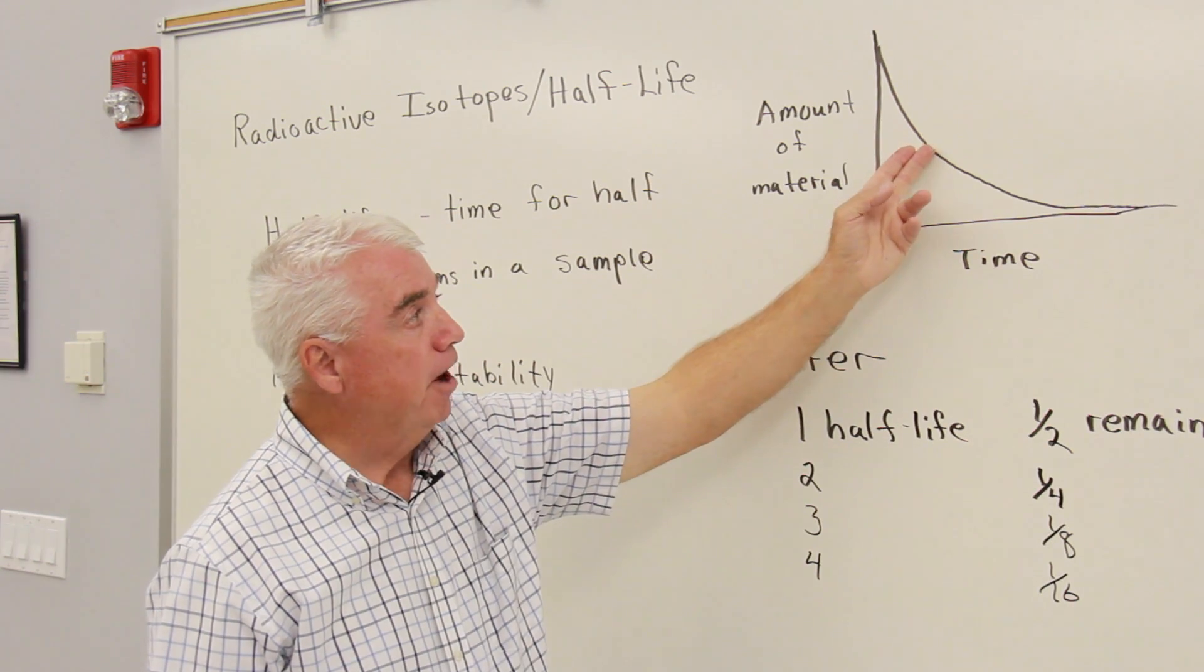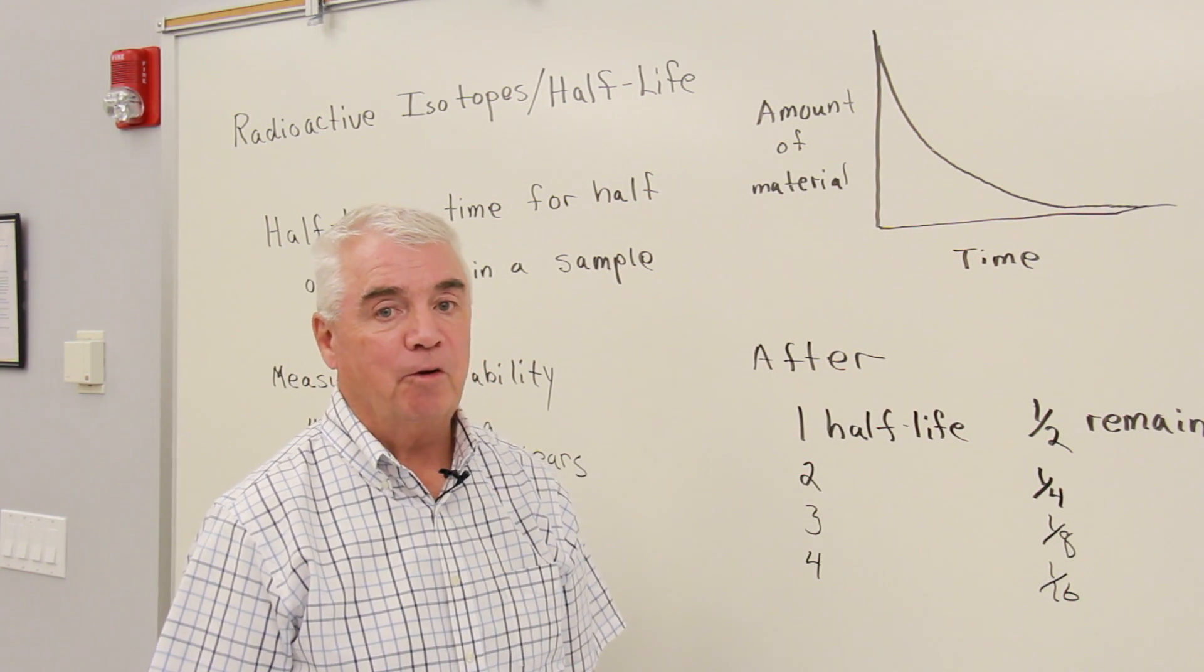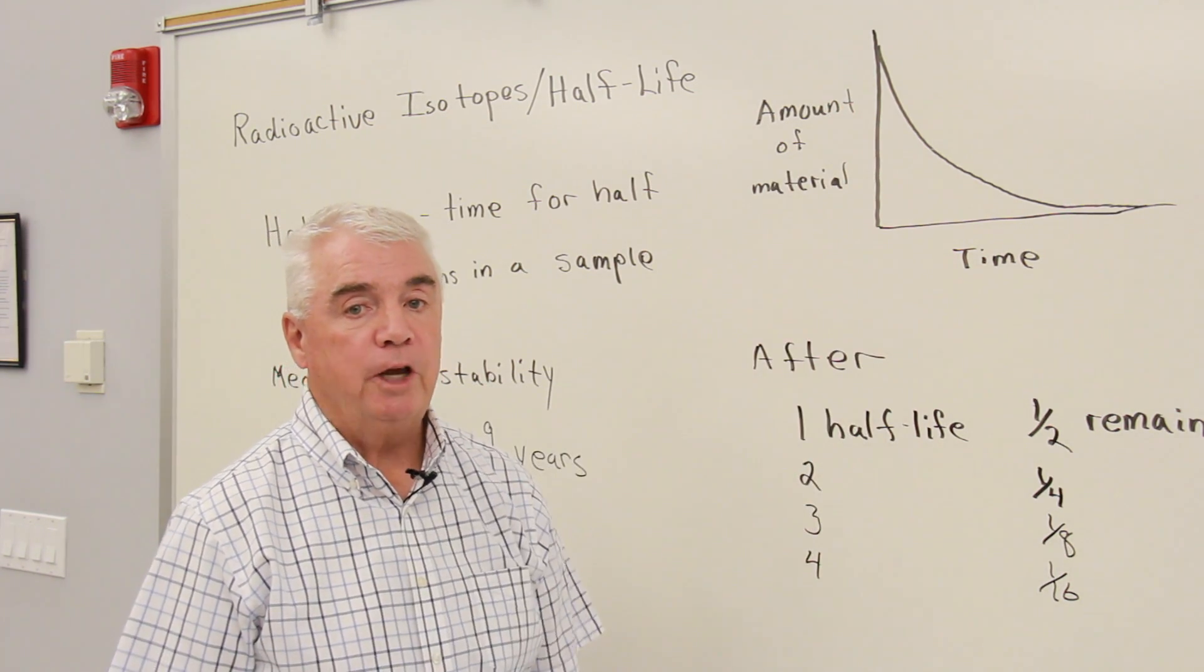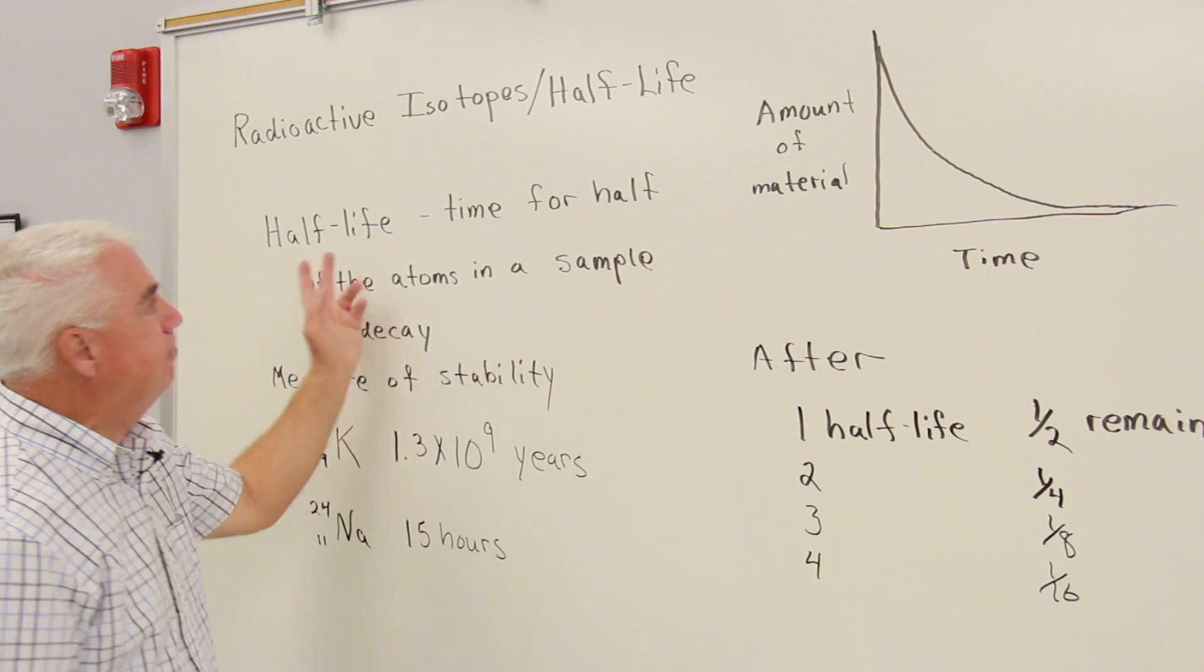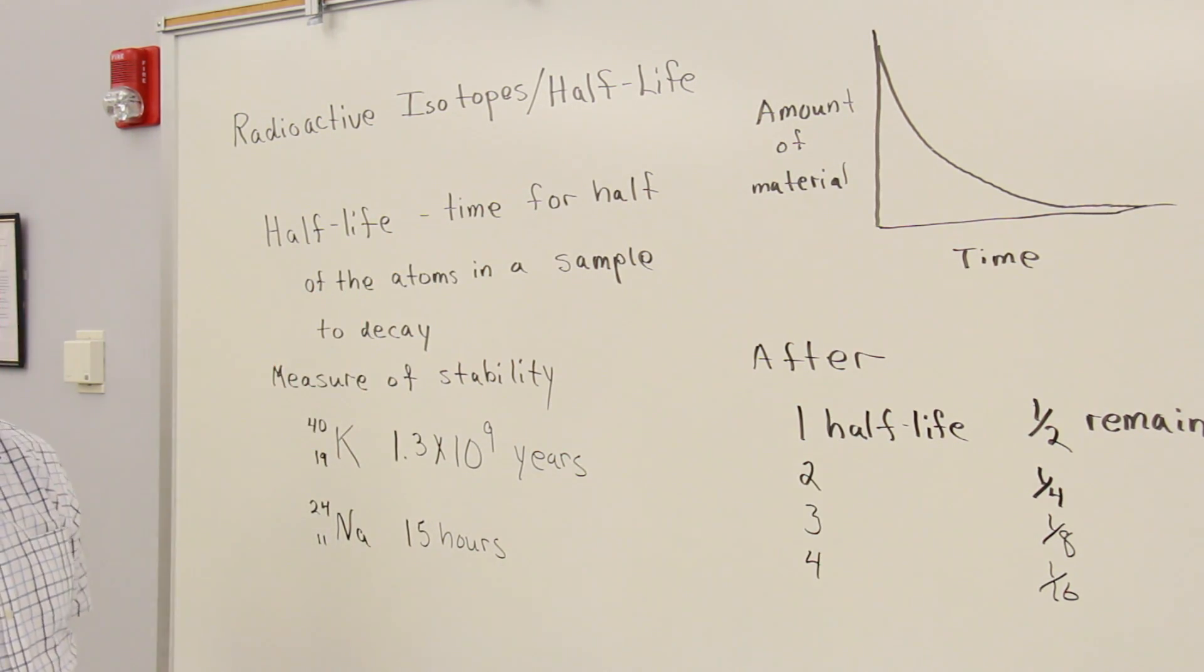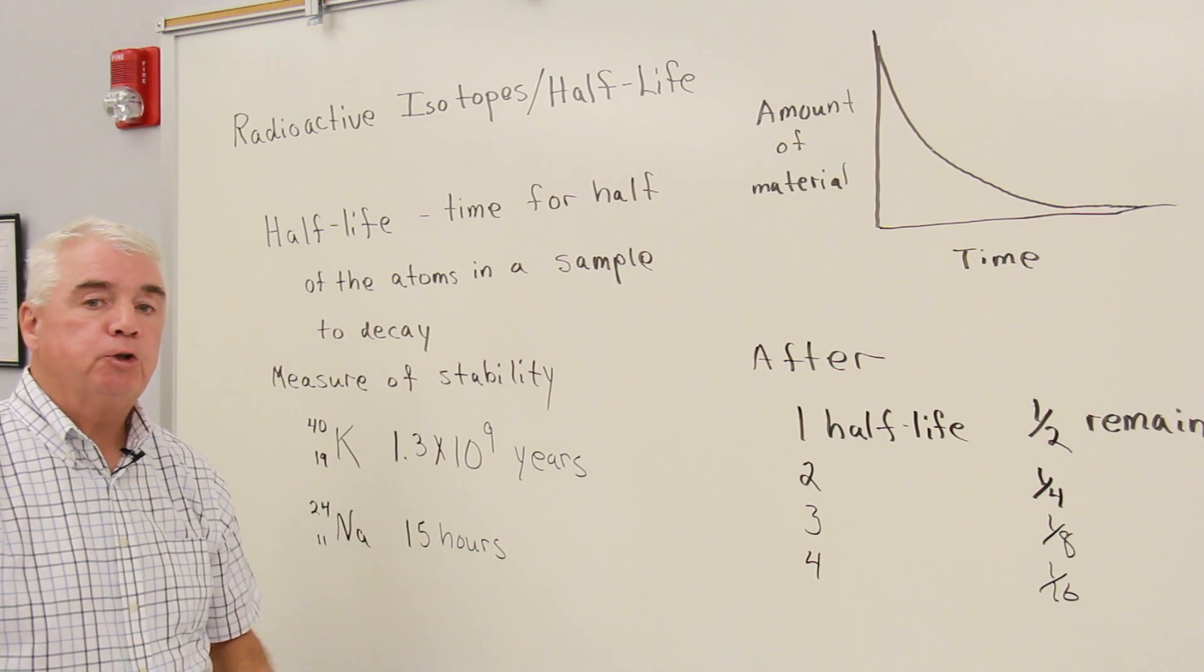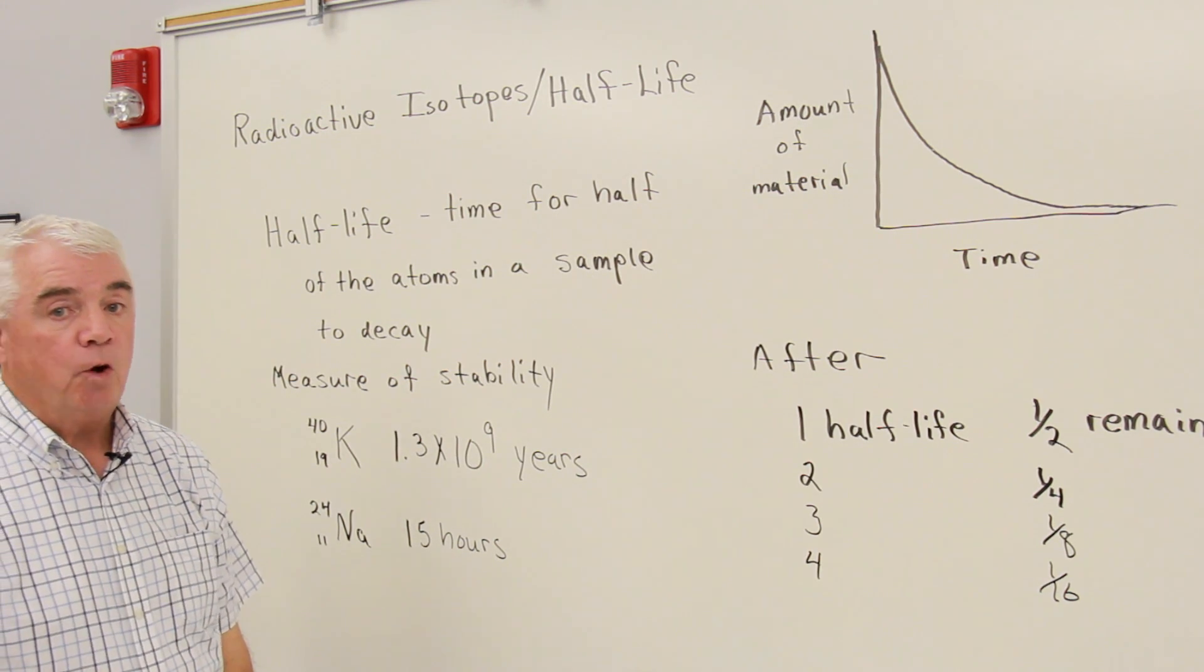But from the graph, I can get some information very precisely, and that is the half-life. I can find the point at which half of the material has disintegrated and the time associated with that. That's called the half-life. Half-life is the time for half of the atoms in a sample to decay, and it's a measure of the stability of the radioactive isotope.